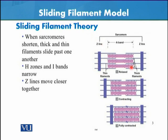Looking at the diagram: this is the Z lines, and this is the A band. We are seeing different stages of muscle contraction. This is the relaxed state, where the Z lines are at their maximum distance apart. This is the contracting stage. And here we can say that the sarcomere is completely contracted.